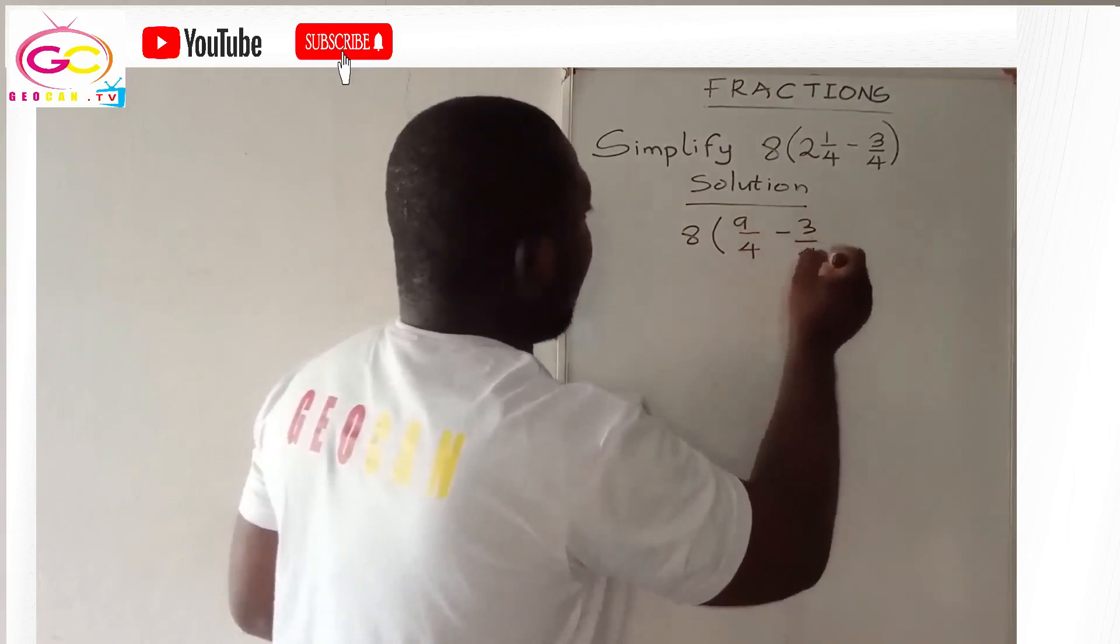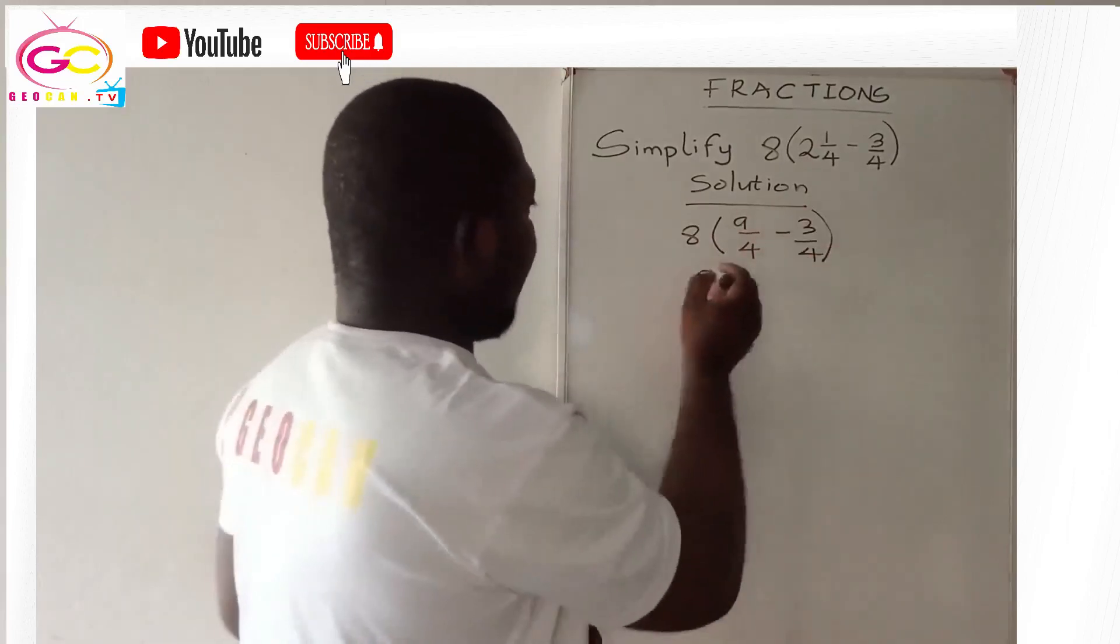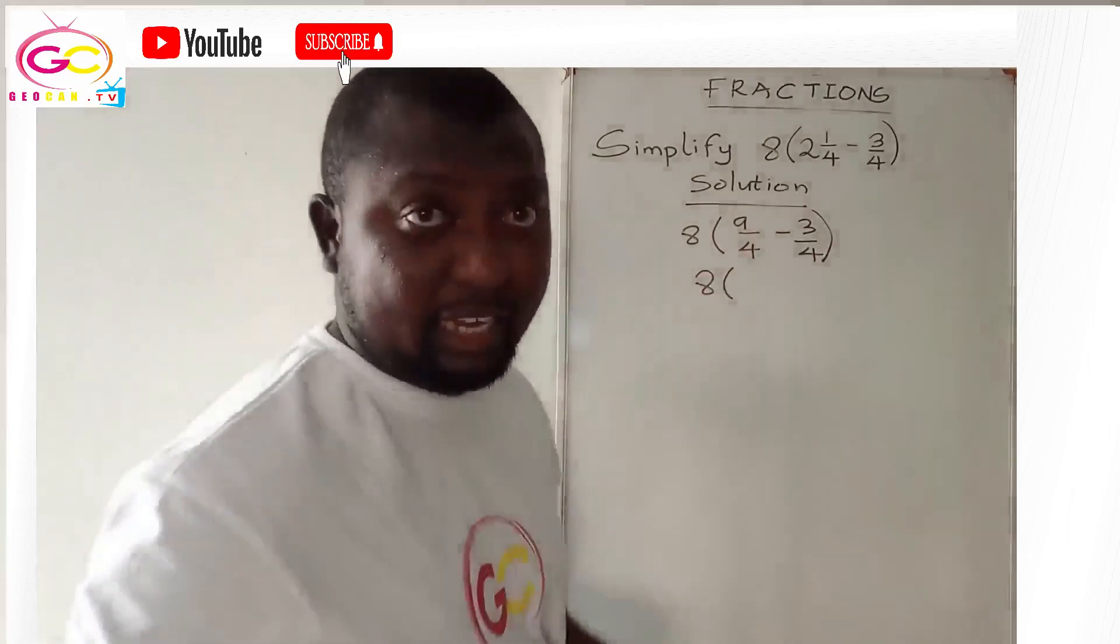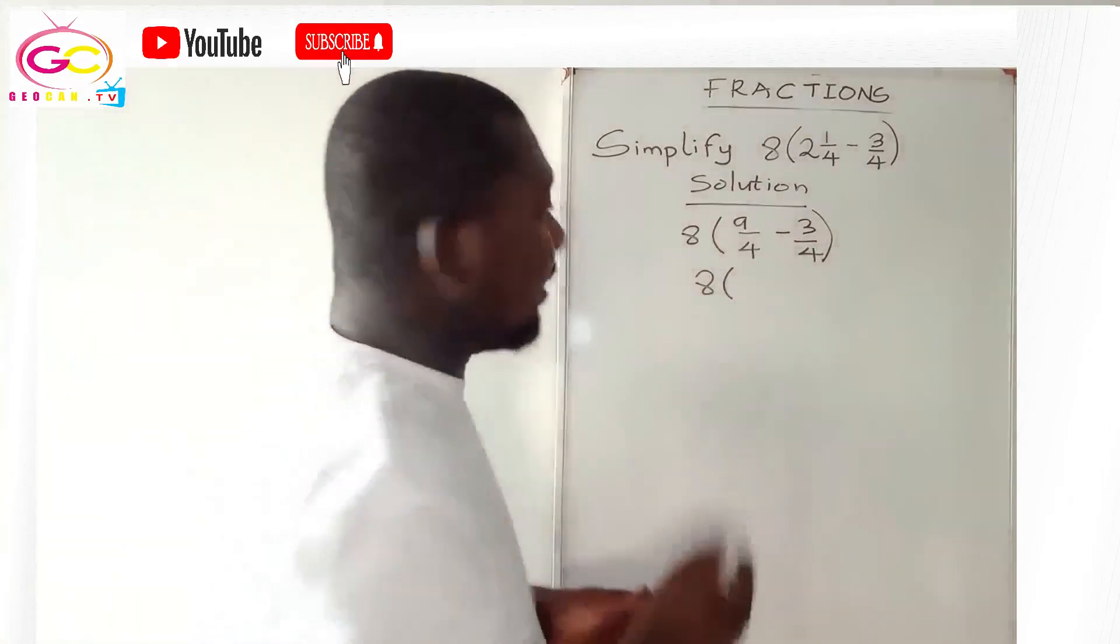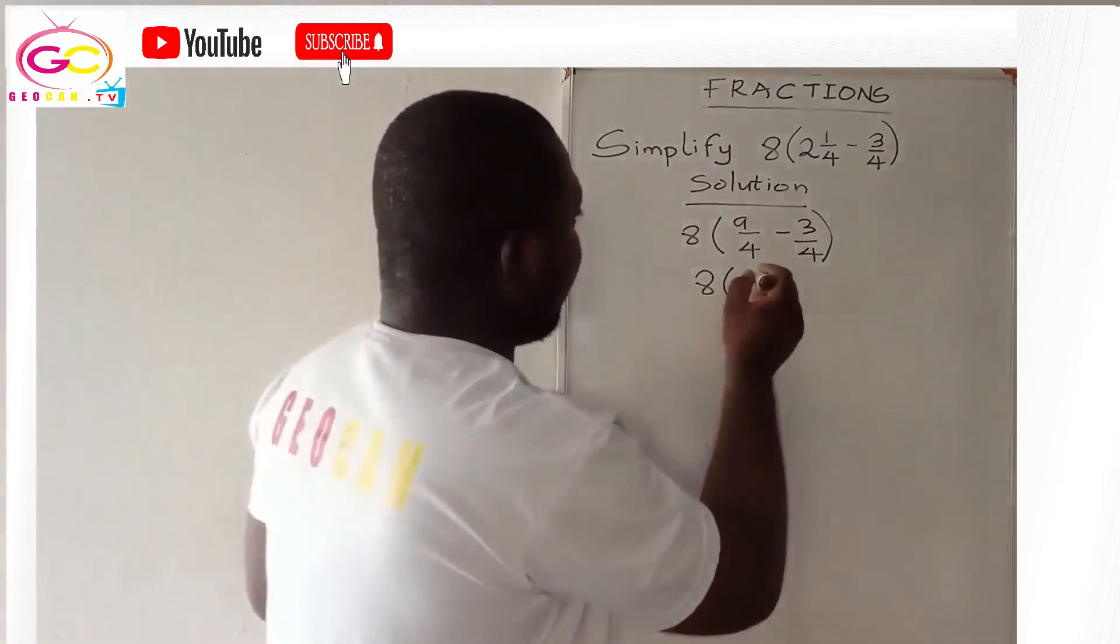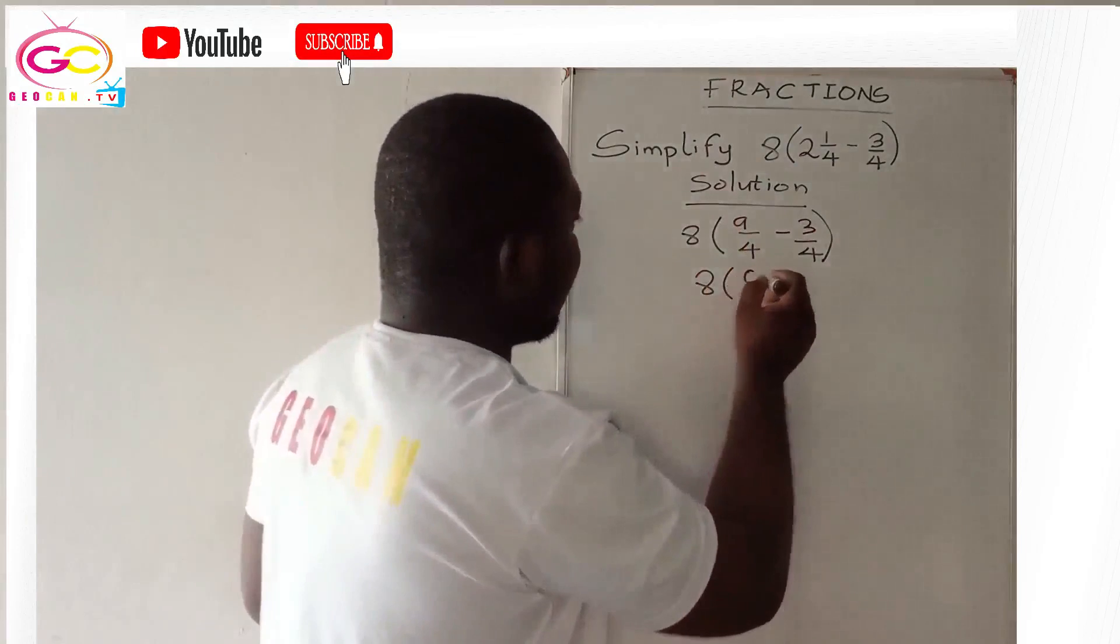Good, so we have our 8. Let's finish tackling the ones in bracket first. Since they have the same denominator, subtract numerators. So 9 minus 3 will give us 6 over 4.